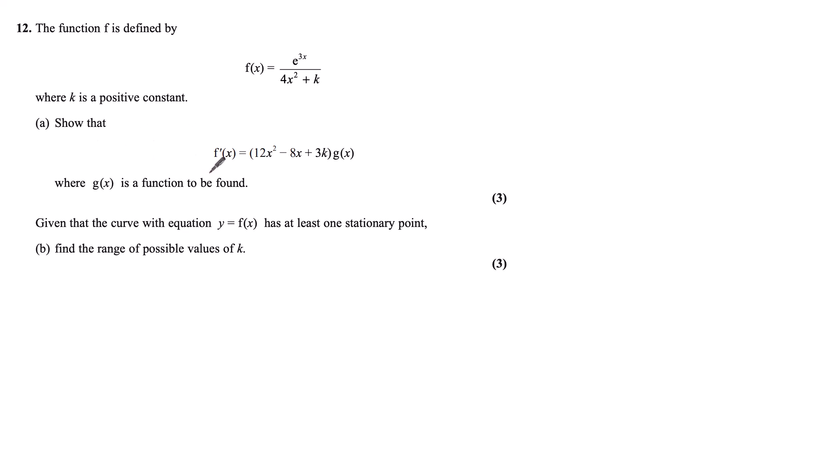Part a, show that f'(x) equals (12x² - 8x + 3k) multiplied by g(x), where g(x) is a function to be found.